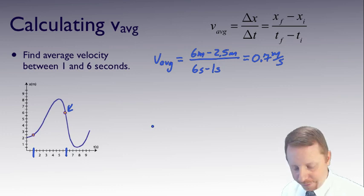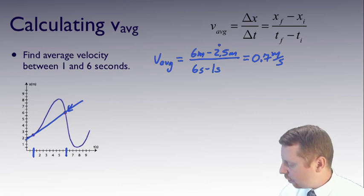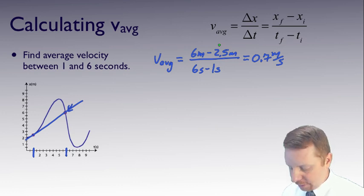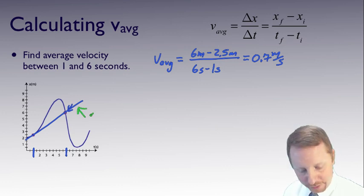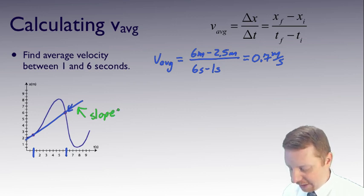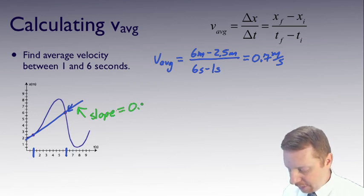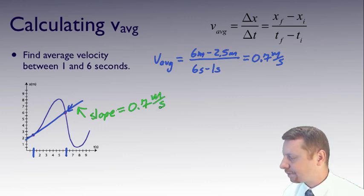This gives us an average velocity of about 0.7 meters per second. Alternately, we could draw a line through those two points and find the slope of that line, which if calculated accurately will also be 0.7 meters per second.